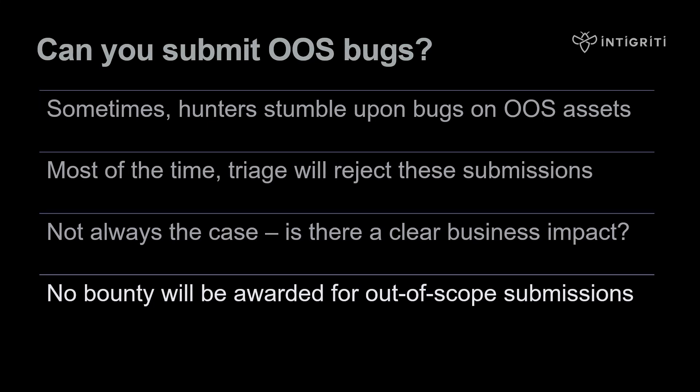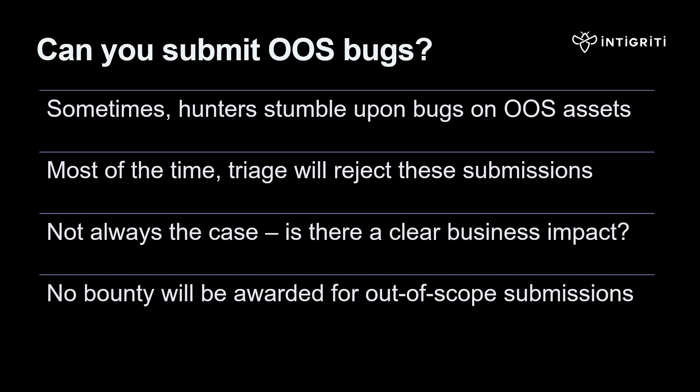Although there is no bounty for out-of-scope submissions, organizations sometimes award a bonus or reputation points depending on the situation. It's a fine line and a contentious topic — we don't want to incentivize out-of-scope testing, but we also don't want to fail to notify organizations of a serious known vulnerability. If you're in doubt, you can go to the Integrity Knowledge Database and search for scope for more information.